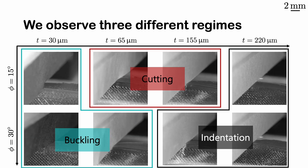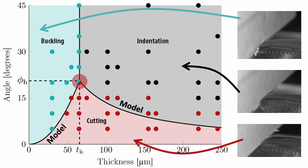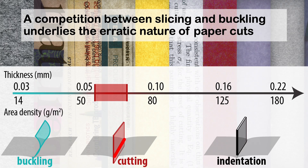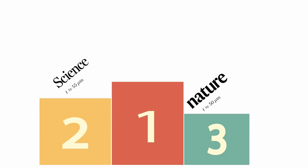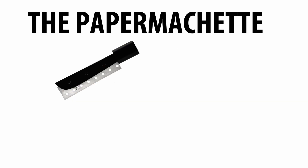Buckling means the paper is too thin to carry the load. Indentation means it's too thick to cut. Cutting only happens when the conditions are just right. The top three most hazardous paper types are: the journal Nature, Science magazine, and the most dangerous is dot matrix printer paper.